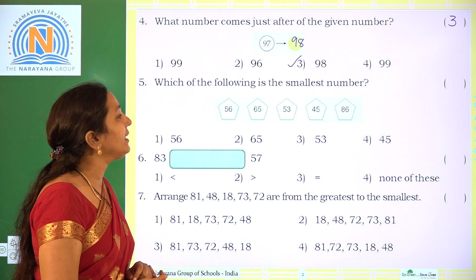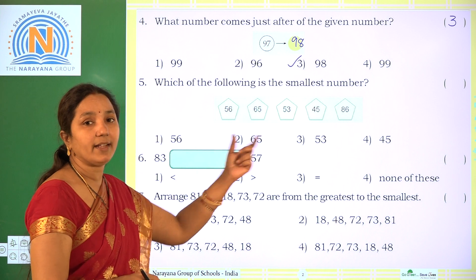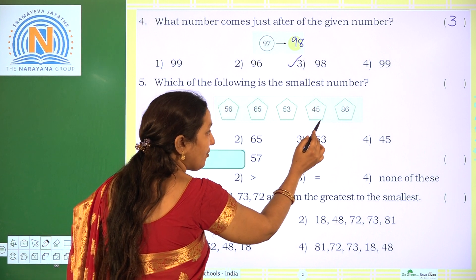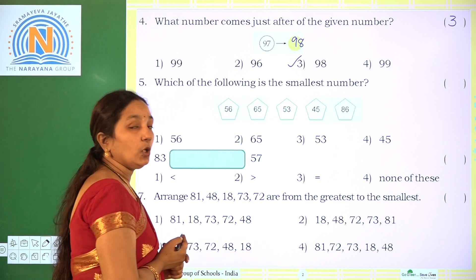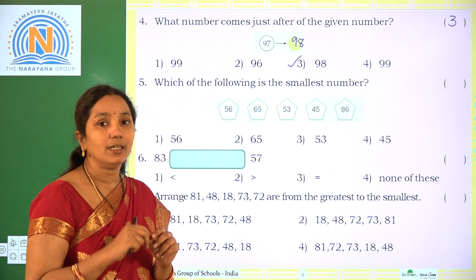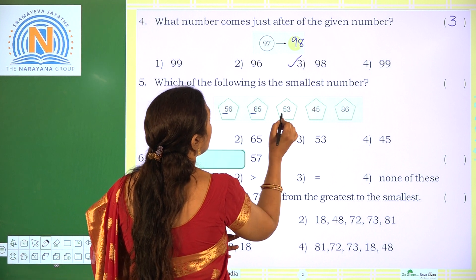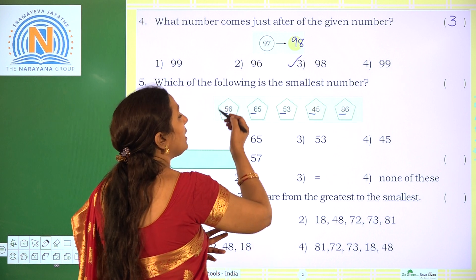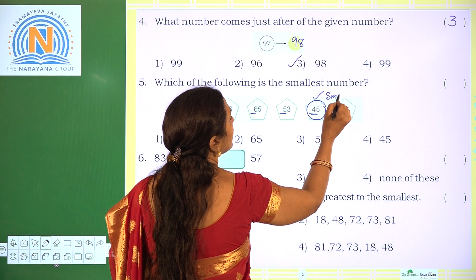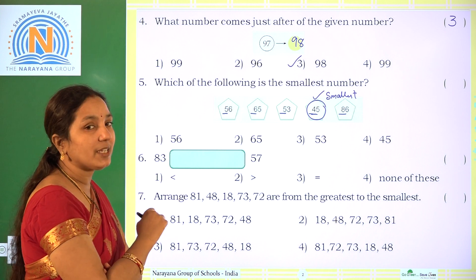Which of the following is the smallest number? The given numbers are 56, 65, 53, 45, 86. Every number has 2 digits — tens and ones. Check the tens place first: 5, 6, 5, 4, 8. The smallest tens digit is 4, so 45 is the smallest number. The correct option is option 4.